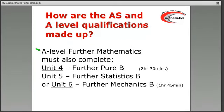Some of you may choose to do a full A-level in further mathematics, in which case you must also complete two extra units. Unit 4, further pure, is compulsory. And then there is a choice on the applied maths: you either do Unit 5, which is further statistics B, or you do Unit 6, which is further mechanics B. And this is the only point in all the A-level maths and A-level further maths that you have a choice of units.